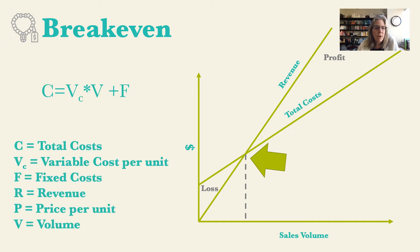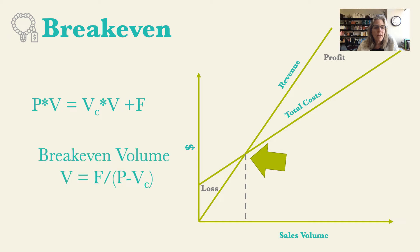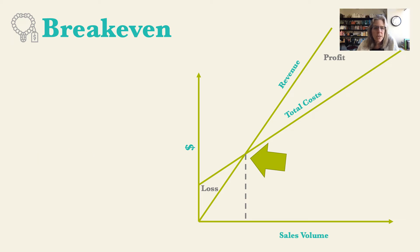We have two equations and we look at the point where they cross. The first equation is: cost equals variable cost times volume plus fixed cost. The revenue equation is: revenue equals price times volume. We set those equal to each other to find the break-even point and solve for volume. Using algebra, the break-even volume equals fixed cost divided by price minus variable cost.